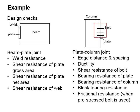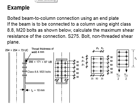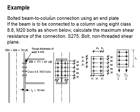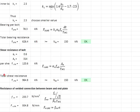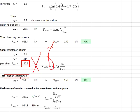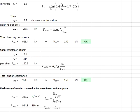Based on the connection here, you know that there will be one shear plane for each bolt. And from the drawing here, you know that there will be a total of 8 bolts. With that, your total shear resistance will be equal to 120.6 times 8, which is equal to 964.8 kilonewton.